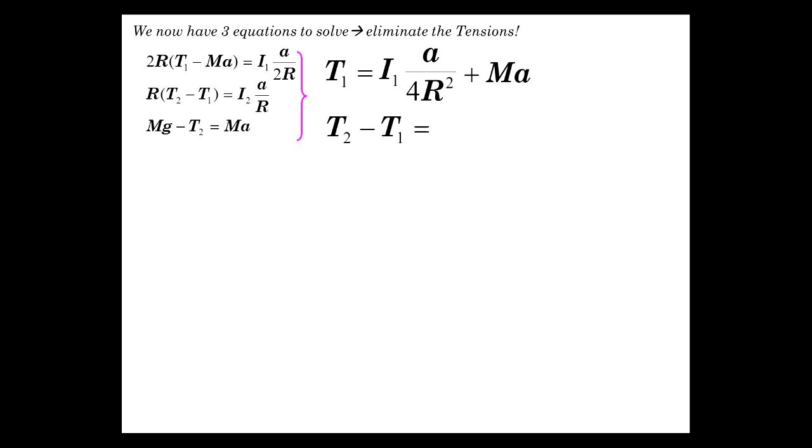How about the next one? Well, divide through by R, and we get T2 minus T1 is I2 A over R squared. And the third one, let's bring M G over to the other side, so minus T2 equals M A minus M G.